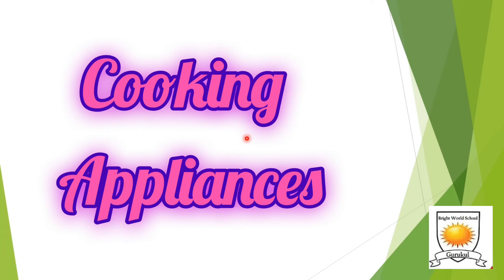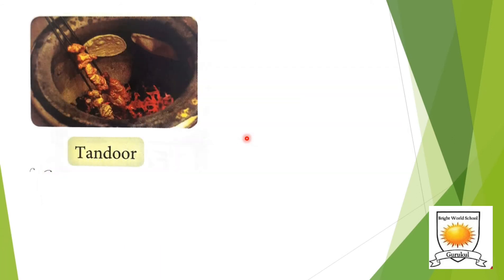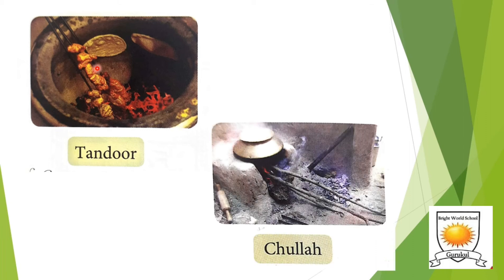Now we will have a look at some cooking appliances and fuels. People use different kinds of fuels and cooking appliances to cook food. A tandoor is a clay oven — one of the oldest traditional ovens — in which fuels such as wood and charcoal are used. A chula is a stove made out of bricks or mud, and wood, cow dung cakes, or charcoal are used as fuels in the chula.